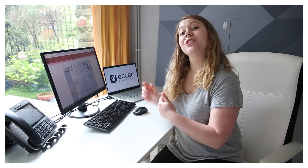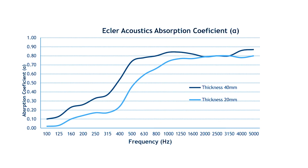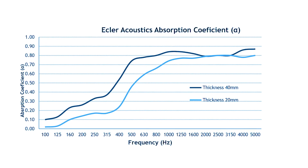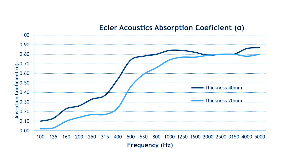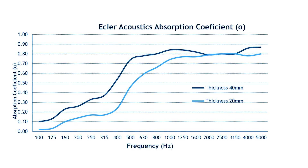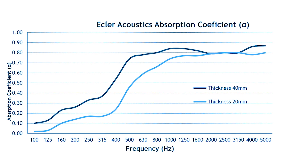With that, we'll have a look at the Eckler Acoustics absorption coefficient chart. There are two thicknesses of panels from Eckler: 40 millimeter and 20 millimeter. The 40mm is optimized at 500 hertz and further, and the 20mm is optimized at 800 hertz and upwards. For reference, human intelligibility is about 1 to 4 kilohertz, so we're looking at about 75 to 85 percent absorption for those frequencies — and that's a lot.